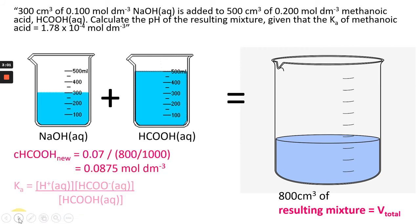So now what we do with that is the Ka expression, given the Ka value of methanoic acid in question. So we know that H plus is going to be the square root of Ka times the concentration of our methanoic acid, which we've just worked out.